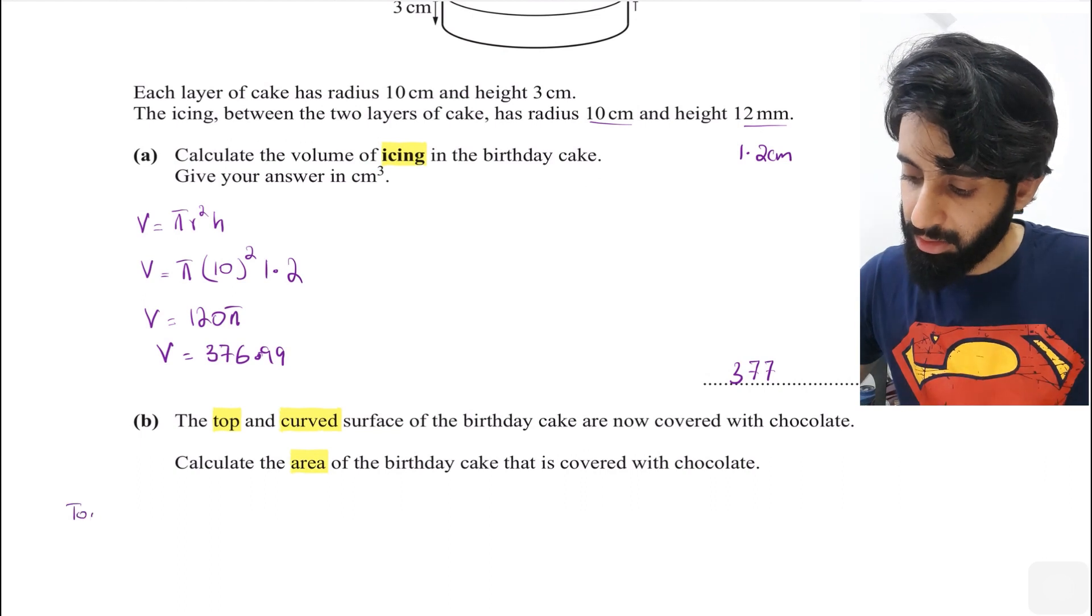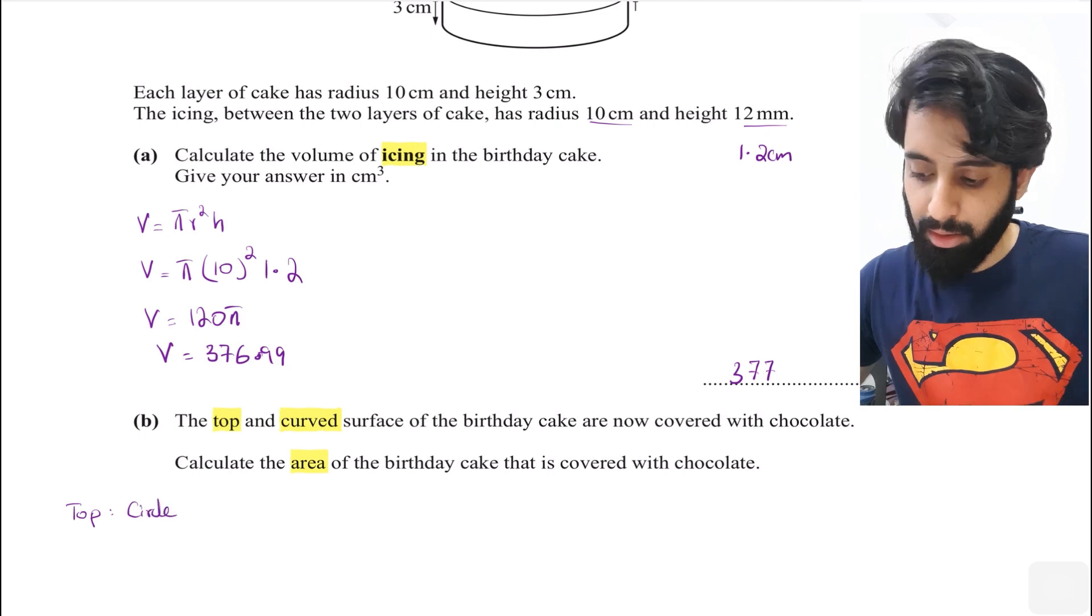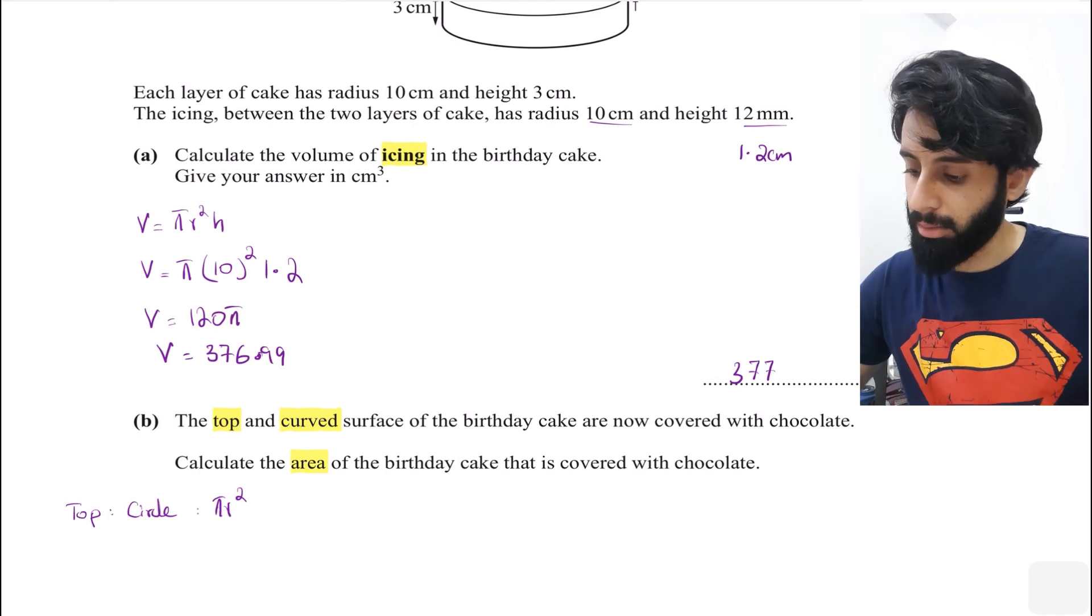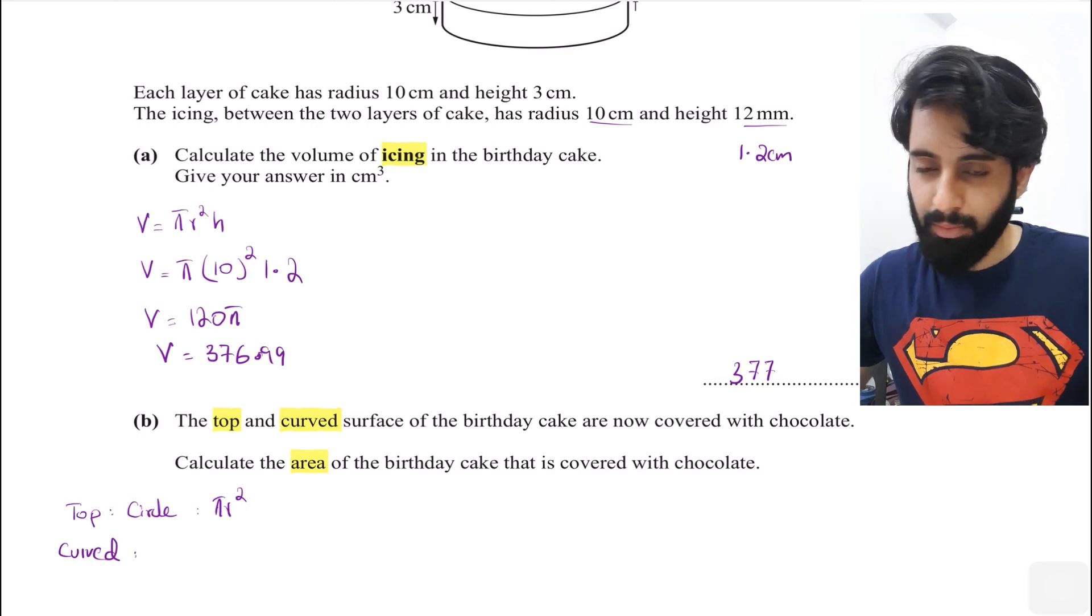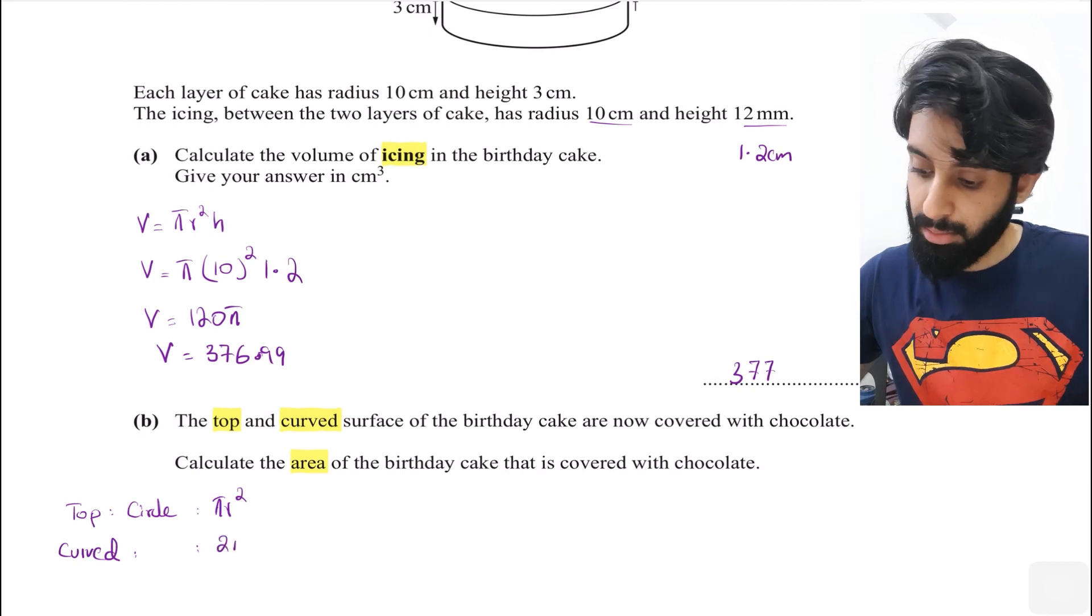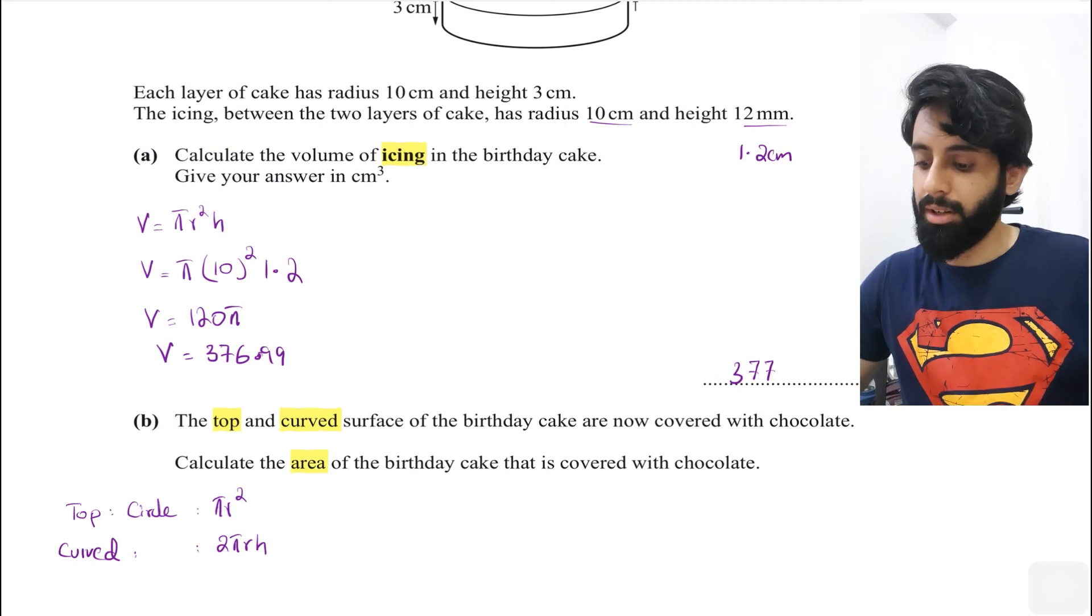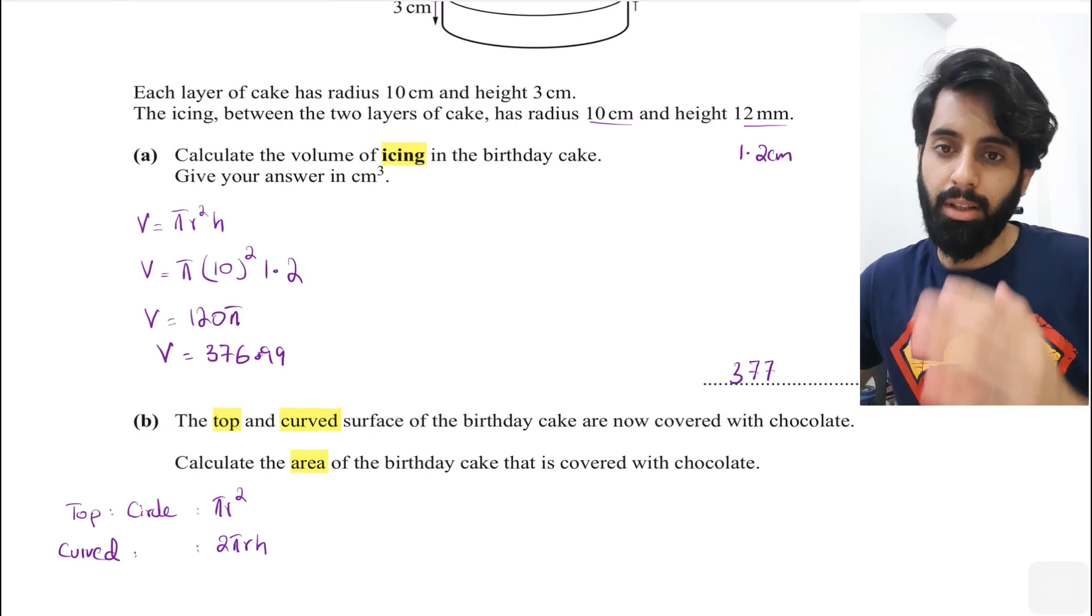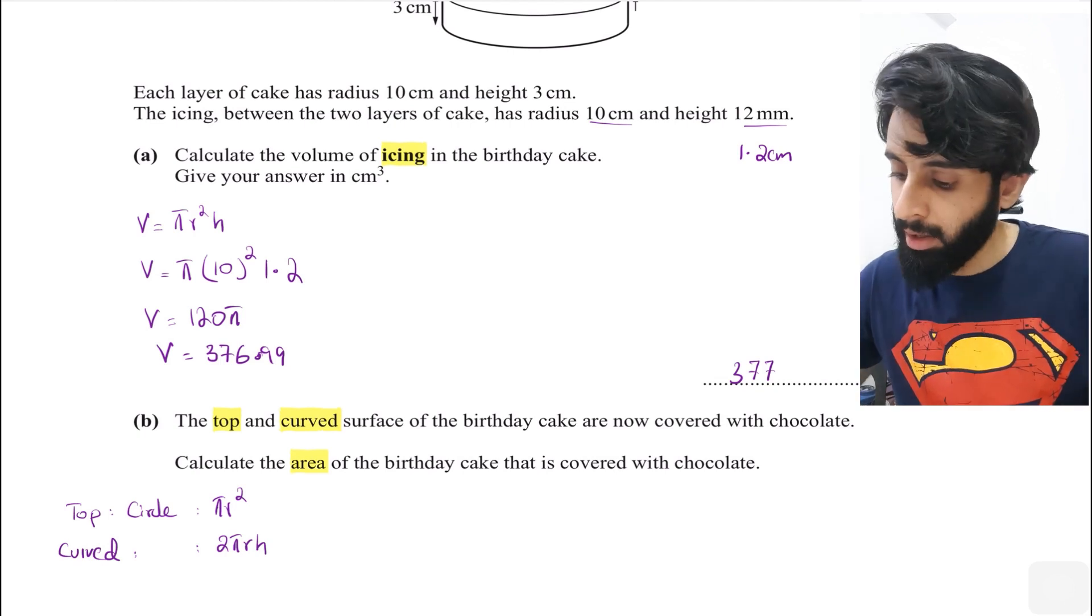Since it's just the top and the curved surface, we're talking about a cylinder. The top of a cylinder is circular in shape, so I'll write circle. That means the area can be worked out by using πr². And then it talks about the curved surface, which is the curved surface area of a cylinder, equal to 2πrh.